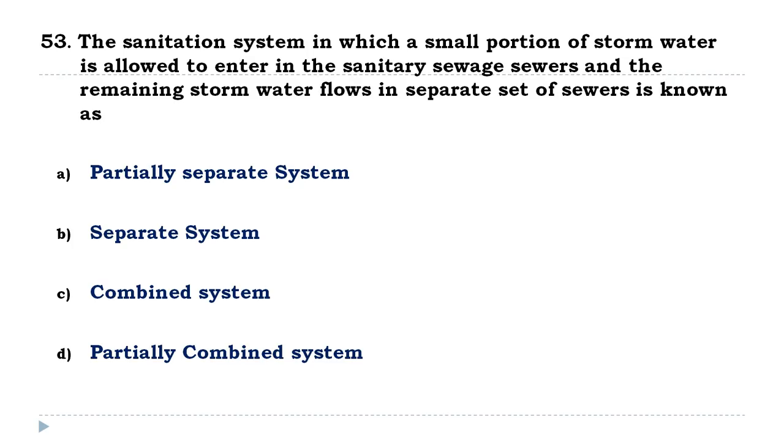The sanitation system in which a small portion of storm water is allowed to enter in the sanitary sewers and the remaining storm water flows in separate set of sewers is known as partially separate system.